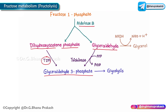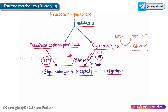Glyceraldehyde has two different pathways depending upon the need. First, it may enter into the synthesis of glycerol, which is responsible for the synthesis of triacylglycerols or fatty acid biosynthesis. Alternatively, glyceraldehyde can be converted to glyceraldehyde-3-phosphate, mediated by the enzyme triokinase, with another molecule of ATP utilized in this step. So one glyceraldehyde-3-phosphate is produced from DHAP and another from glyceraldehyde itself.